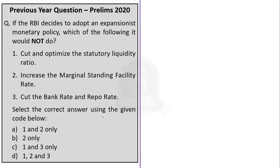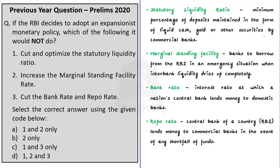The next question is an economics question. It asks: if the RBI decides to adopt an expansionist monetary policy, which of the following would it not do? An expansionary policy seeks to stimulate an economy by boosting demand through monetary and fiscal stimulus, intended to prevent or moderate economic downturns and recessions. It boosts business investment and consumer spending by injecting money into the economy through direct government deficit spending or increased lending.